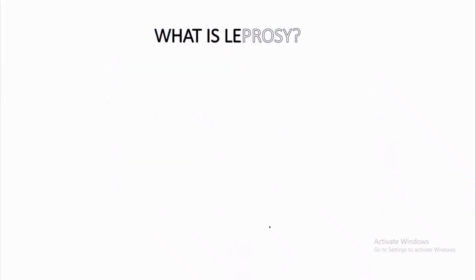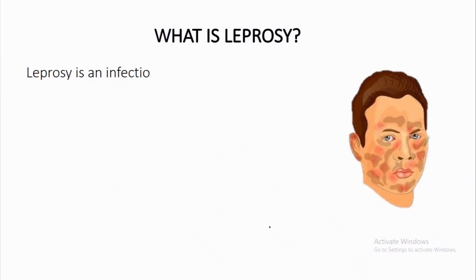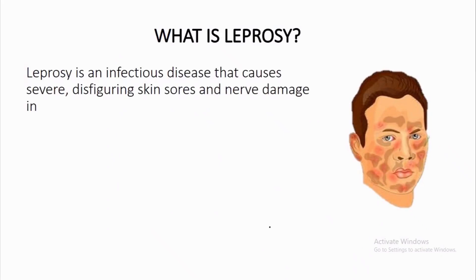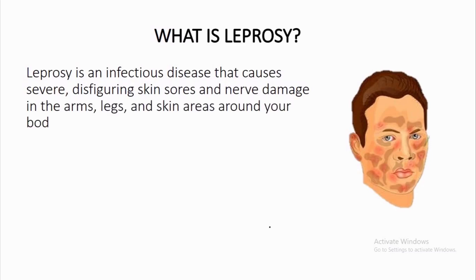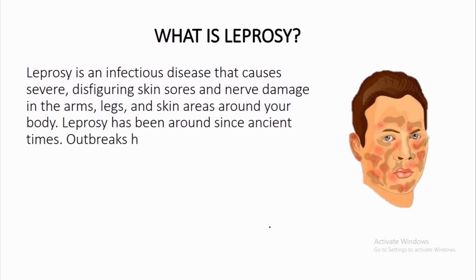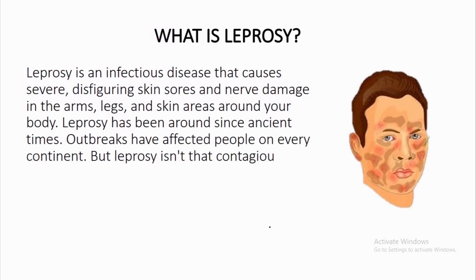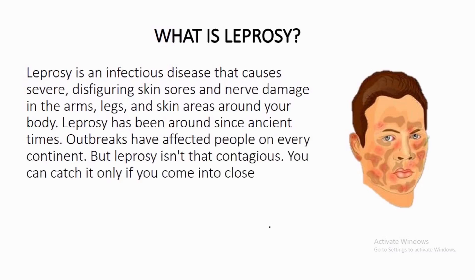What is leprosy? Leprosy is an infectious disease that causes severe, disfiguring skin sores and nerve damage in the arms, legs, and skin areas around your body. Leprosy has been around since ancient times. Outbreaks have affected people on every continent, but leprosy isn't that contagious.